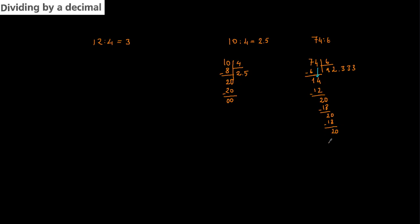So 74 divided by 6 is going to be equal to 12.333... continuing infinitely. We stop here and write it as a repeating decimal. For a repeating decimal, we write 12.3 with a bar over the 3, which tells us that 3 is repeating infinitely many times. That is approximately 12.3 repeating. This was the important part about division.